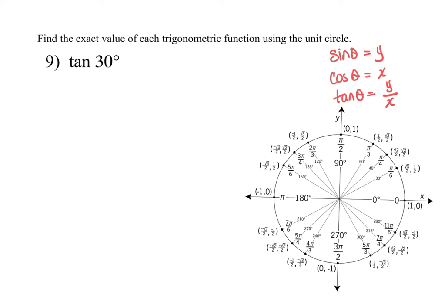This is asking for the tangent of 30 degrees. So you want to go on your unit circle and find your 30 degrees. Tangent is going to be your y value over your x value. So here we're going to have 1 half over square root of 3 over 2. Now remember these are fractions. So you are going to keep the top fraction, change it to multiplication, and flip the bottom fraction.